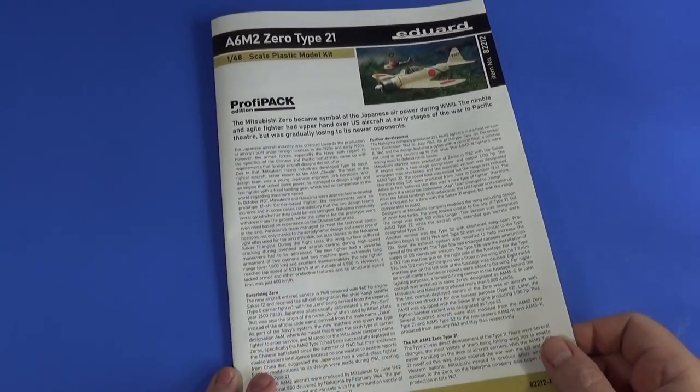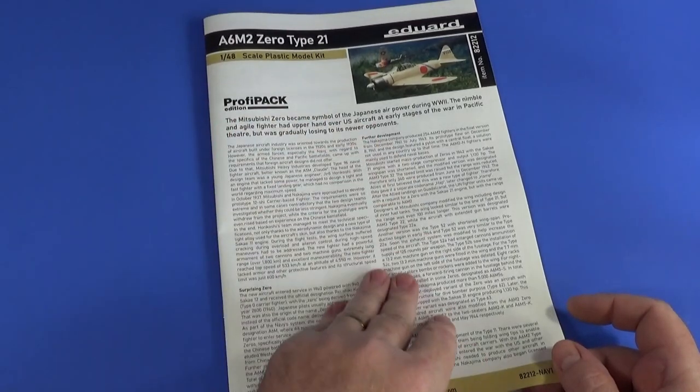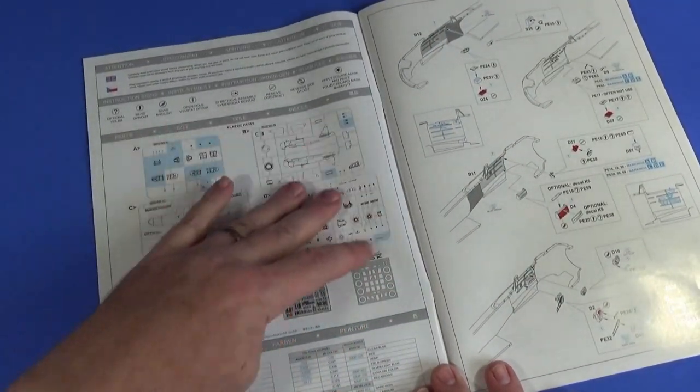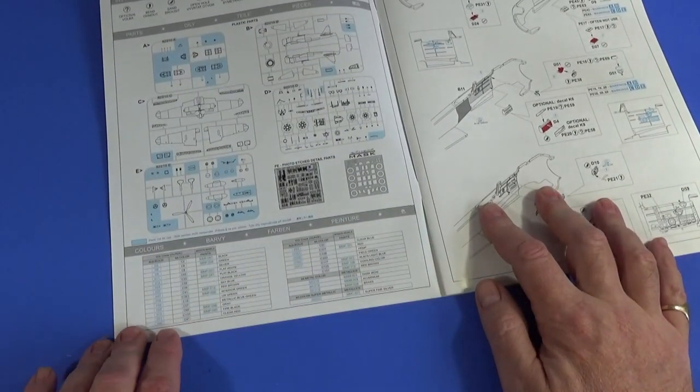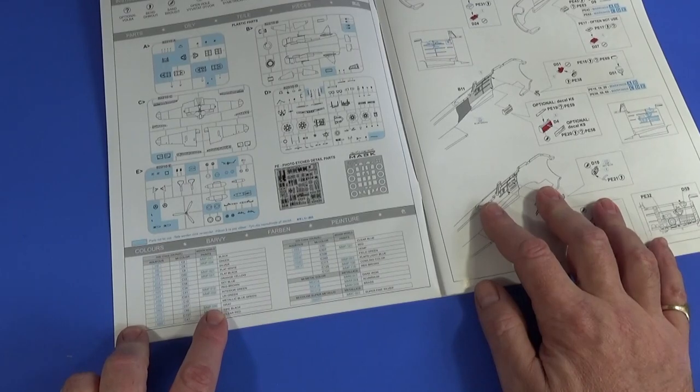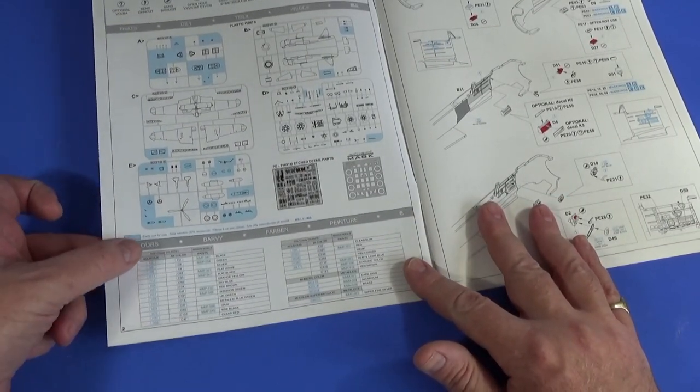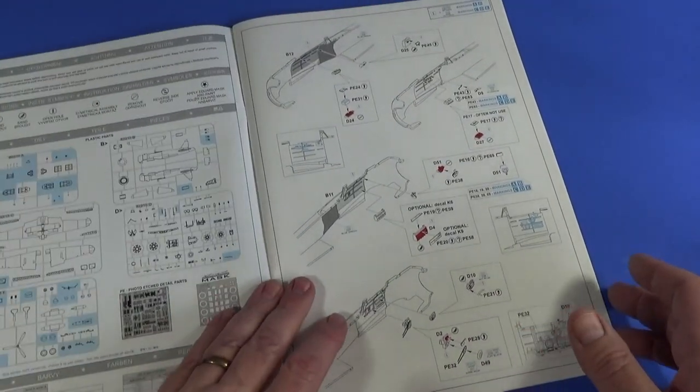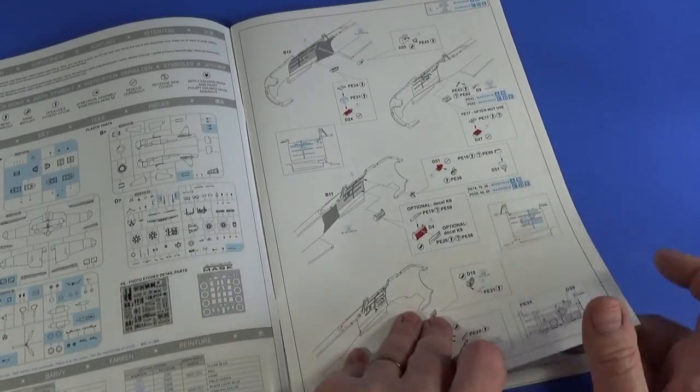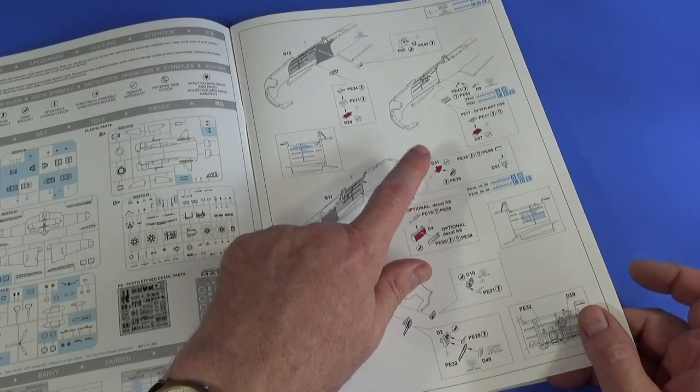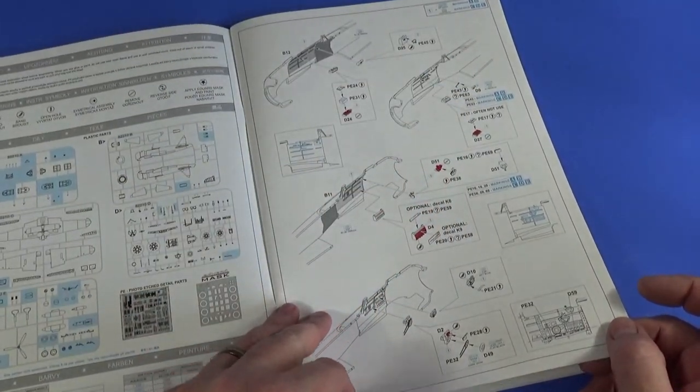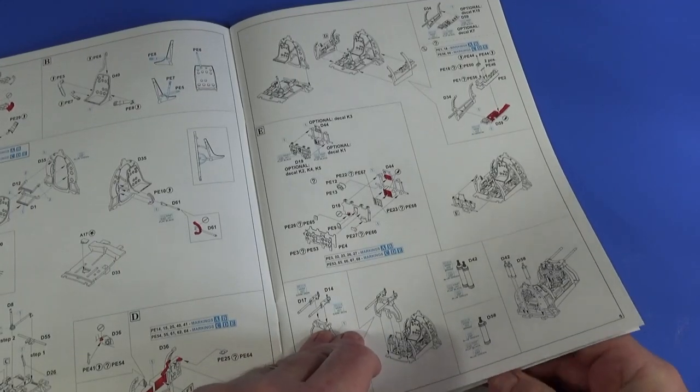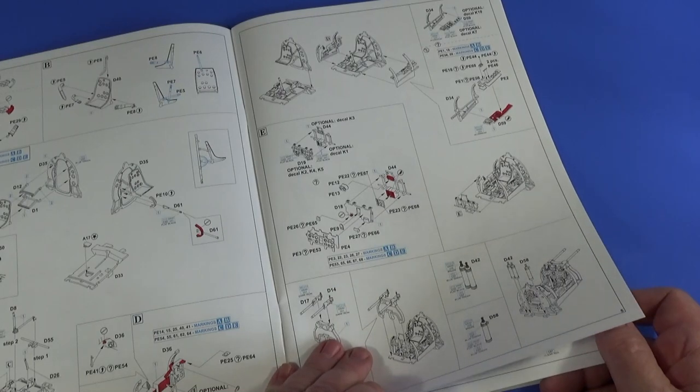The instruction sheet comes with a quite detailed history of the zero here, which is really nice. On the inside, there's the map of all the frames. There's color call-outs at the bottom, basically Gunze Color and Mission Models colors. Most of them are going to be Mr. Color, I guess, or the Gunze aqueous. We'll find some equivalents to those if we can't find the exact ones. And then the instructions, there's a lot to it. There's a lot of bits where you can have photo etch instead of regular plastic.